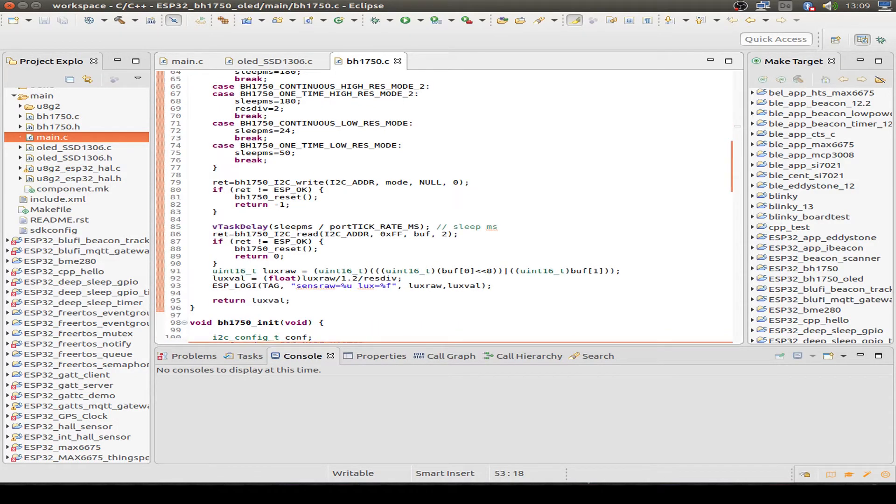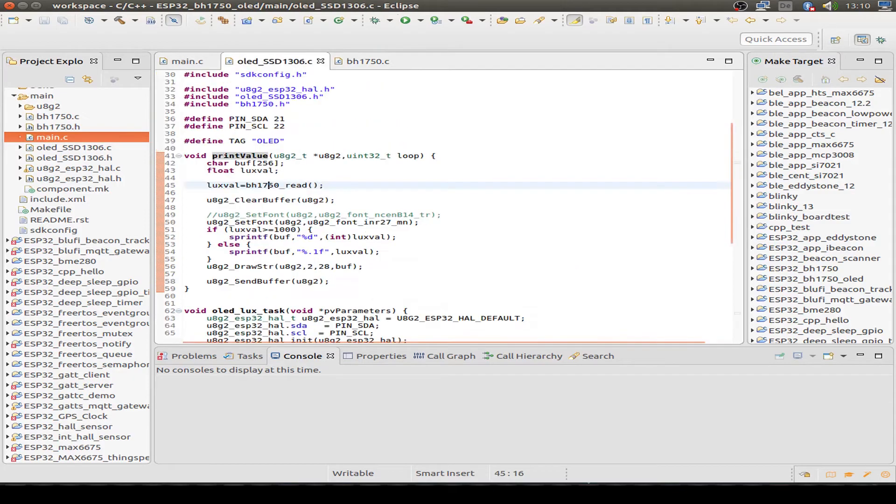We write the I2C package to the sensor with the mode. We sleep for the time that is used for the measurement. Then we read the I2C bus. We just get a raw value and we have to calculate the real value. That is done here with the formula from the data sheet. Then we print out our value and that's it.